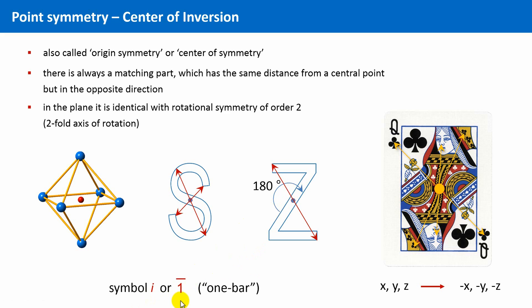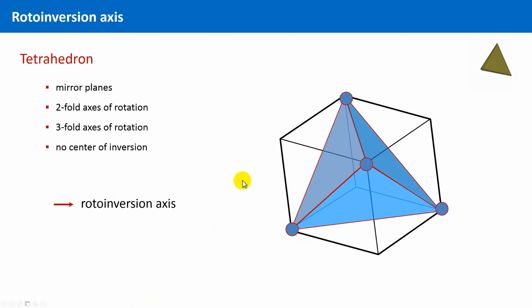Okay, only one last symmetry element concerning point symmetry is left, and this can be illustrated at such a tetrahedron. A tetrahedron is an equilateral triangular pyramid with a regular triangle as basal face. Such a tetrahedron can be derived from a cube at which only every second corner is occupied.